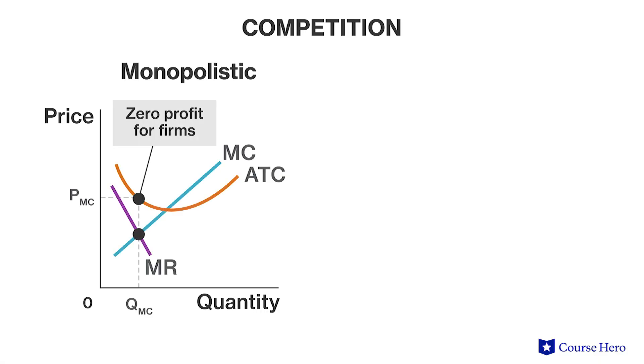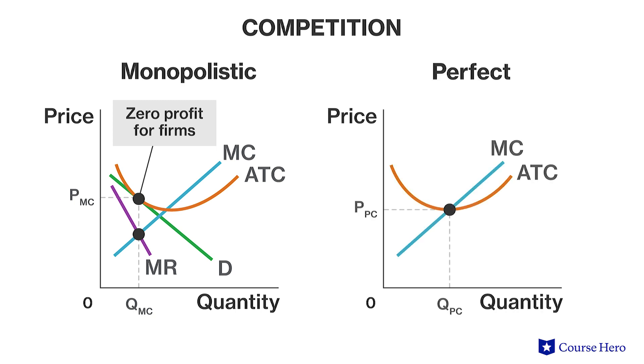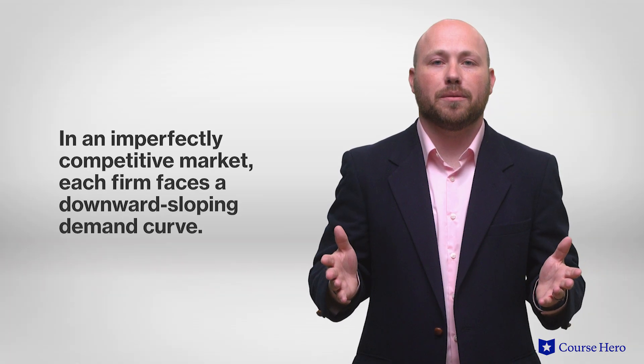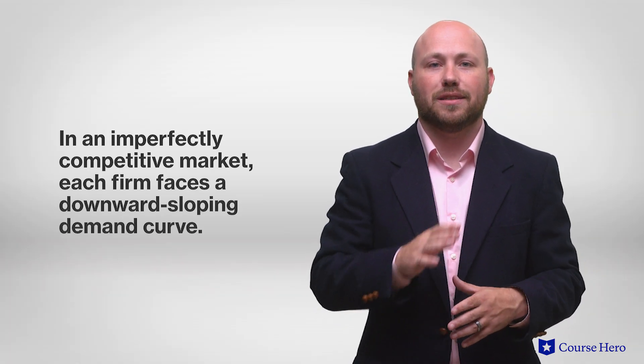Although this situation resembles a perfectly competitive market to the extent that entry barriers are low and there are many producers, it is different from perfect competition in which the market sets the price for a good. In a perfectly competitive market, the individual firm has no pricing power whatsoever. Therefore, firms face a horizontal demand curve, meaning demand stays the same no matter how much is produced. In an imperfectly competitive market, each firm faces a downward sloping demand curve, so the more of a good produced, the lower the price will be.